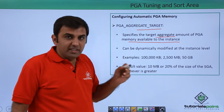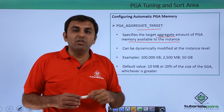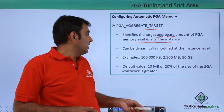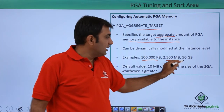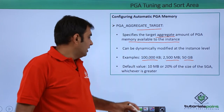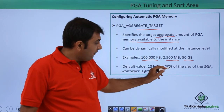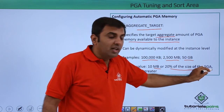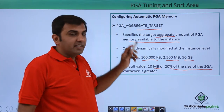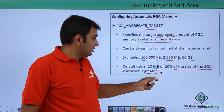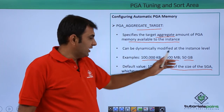The PGA aggregate target can be dynamically modified at the instance level — meaning you can change the value of this parameter while the database is running. For example, you can set it to 2500 MB or 50 GB. The default value is 10 MB or 20 percent of your SGA size, whichever is greater.